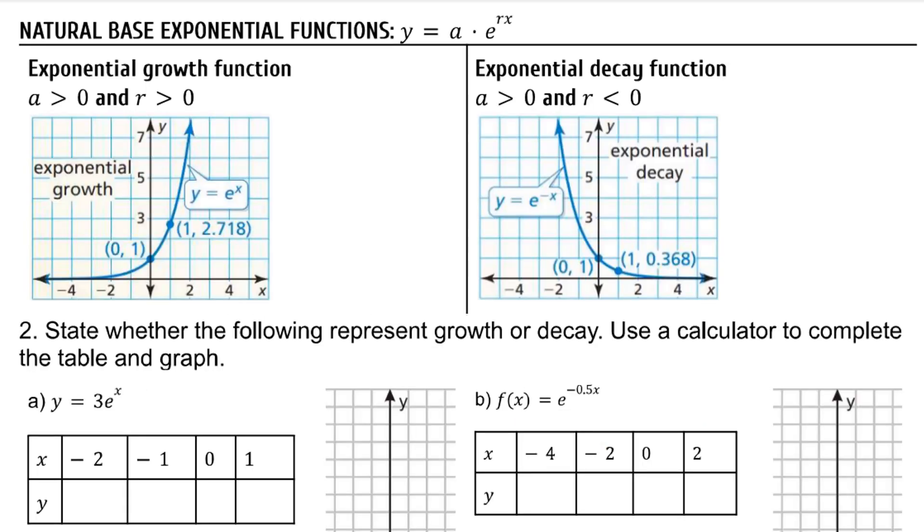For natural base exponential functions, y = Ae^(rx). For exponential growth, A and r both need to be greater than 0. For exponential decay, A needs to be greater than 0 and r needs to be less than 0. Remember, we get decay from that exponent being negative because when you make the x negative, you have a reflection in the y-axis.